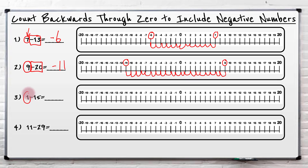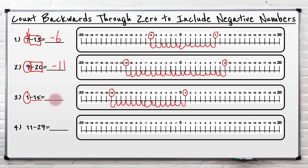Let's look at this one. So we're at one and we're taking away fifteen — going back fifteen. Start at our one, go back fifteen: one, two, three, four, five, and then another five — six, seven, eight, nine, ten, then eleven, twelve, thirteen, fourteen, fifteen. That takes me to minus fourteen.